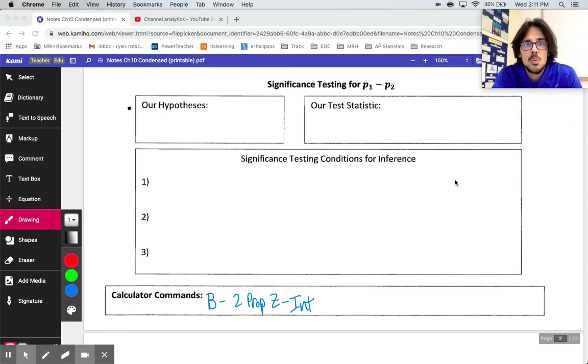In our previous video, we established the idea that you might have two different proportions, maybe men and women, Democrat and Republican, whatever it may be, and you may be looking to compare those two groups to each other on a certain issue. We learned last chapter how to do sampling distributions and confidence intervals for that difference of two proportions. We're jumping now into significance testing for a difference in proportions. It's basically like the chapter 9 version of a problem with two P's in it.